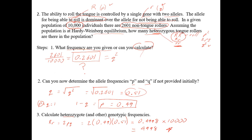We could also calculate p² to find the expected number of homozygous dominant individuals.